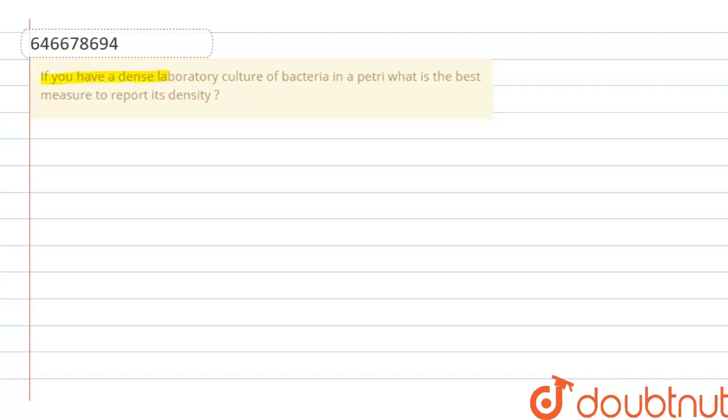you have a dense laboratory culture bacteria in a petri dish, what is the best measure to report its density? So for this we have to dilute